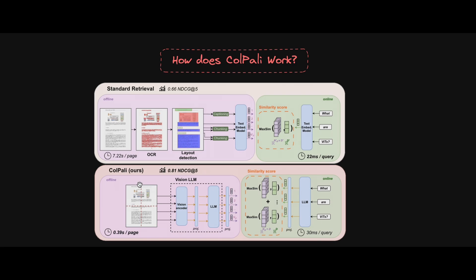In the standard offline stage, all pre-processing happens — layout detection, captioning, text embedding — and everything is indexed and stored. In the online stage, you are querying, doing similarity score search, and getting results.